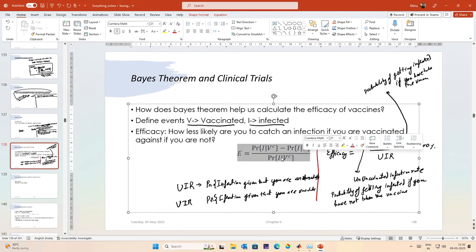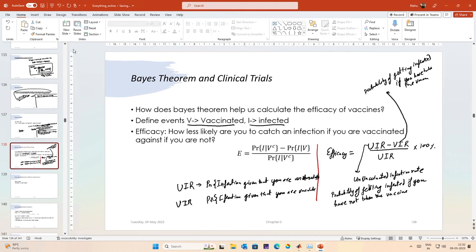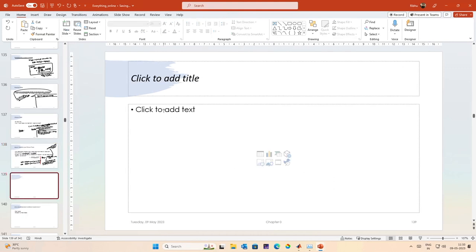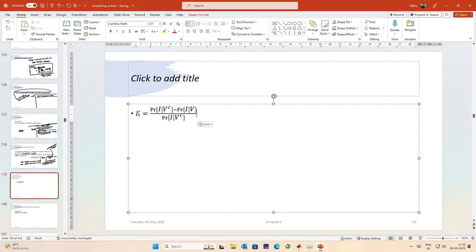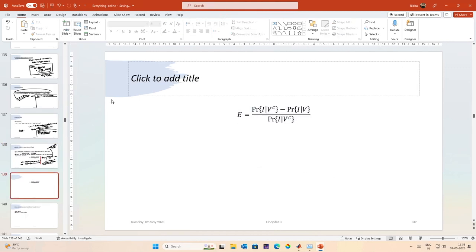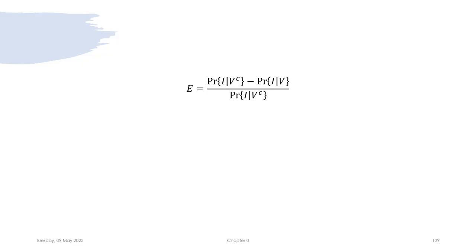Let me copy this result onto a new slide and see how we deal with this. This is the efficacy of a vaccine expressed in terms of those conditional probabilities.